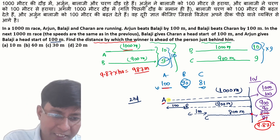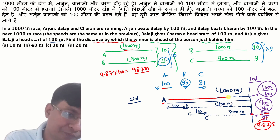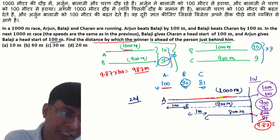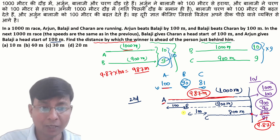The winner is C, finishing in 9.87 seconds. Now, A is at the starting point and the question asks how far the winner is ahead of the person just behind. When C finishes, A has traveled approximately 9.87 meters — wait, A travels at speed 100 meters per 10 seconds.